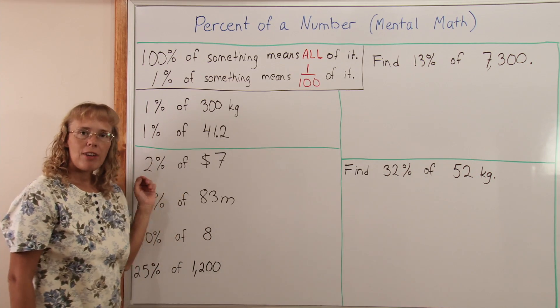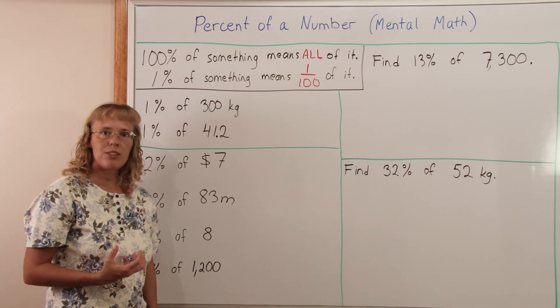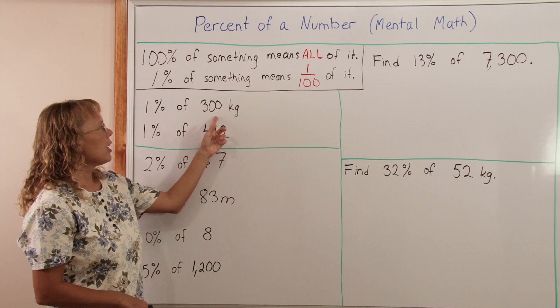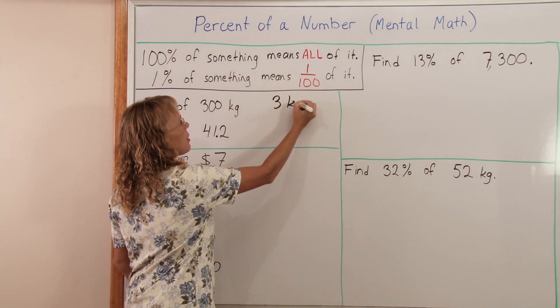If we want to find 1% of 300, it just means one hundredth part of it, so we divide by 100. 300 divided by 100 is 3, so that's 3 kilograms.